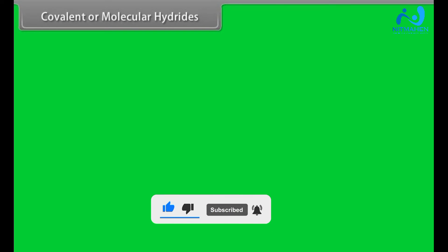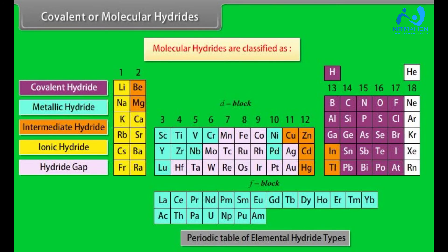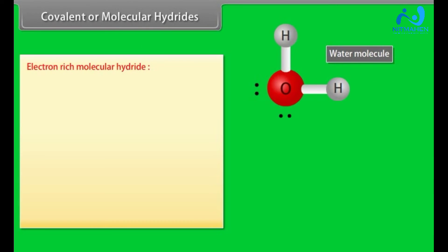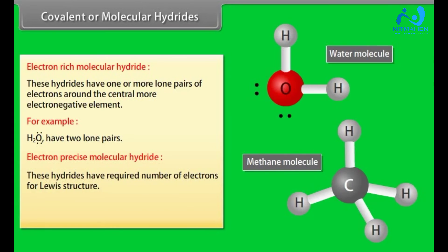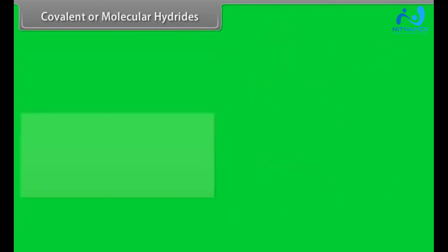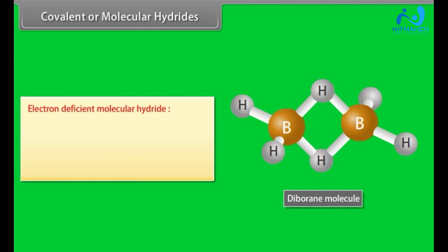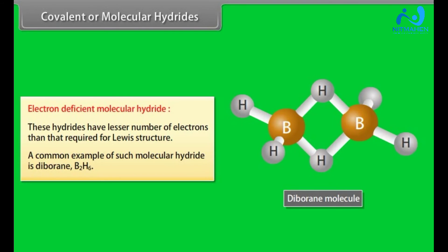Covalent or molecular hydrides. Molecular hydrides are classified as: Electron-rich molecular hydride. These hydrides have one or more lone pairs of electrons around the central more electronegative element. For example, water has two lone pairs. Electron-precise molecular hydride. These hydrides have required number of electrons for Lewis structure. A common example of electron-precise molecular hydride is Methane. Electron-deficient molecular hydride. These hydrides have lesser number of electrons than that required for Lewis structure. A common example of such molecular hydride is Diborane.